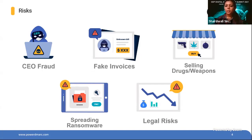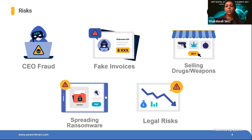When email spoofing and phishing attacks happen due to email authentication failure, it leads to multiple risks. There can be CEO fraud, where a spoof email is sent on behalf of the CEO or CTO — mostly executives of your organization. There can also be fake invoices, where your vendors and customers receive wrong bank details from attackers to wire money.